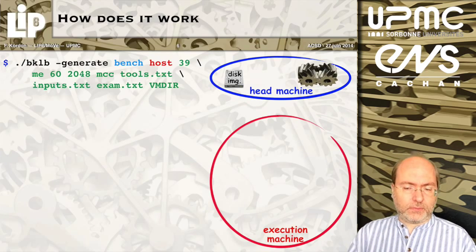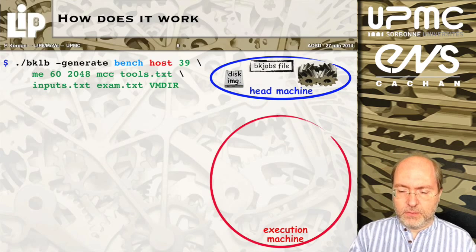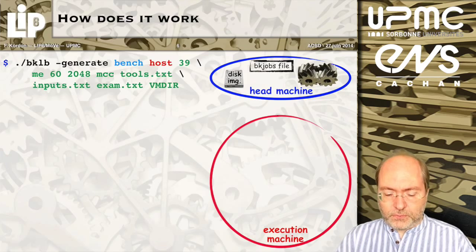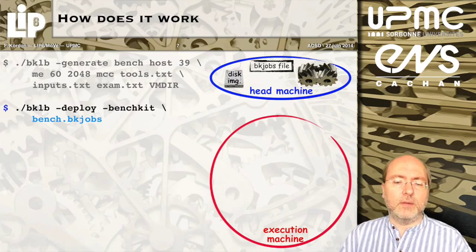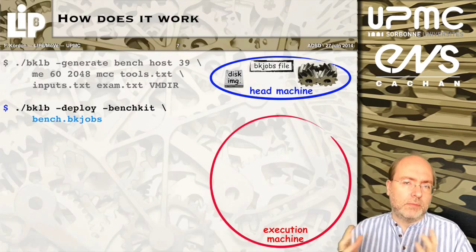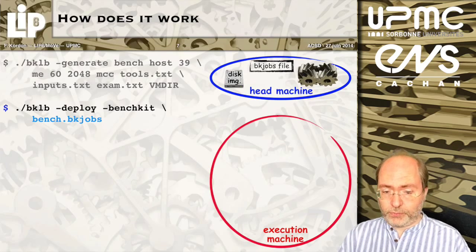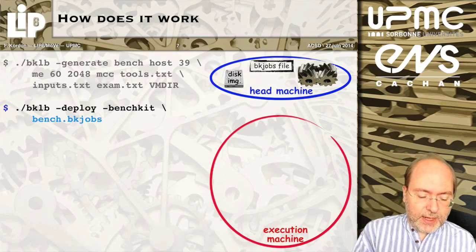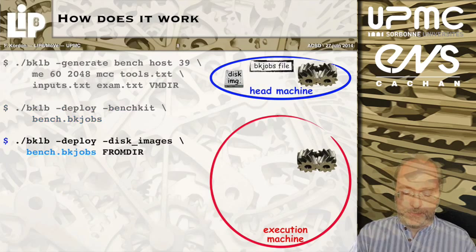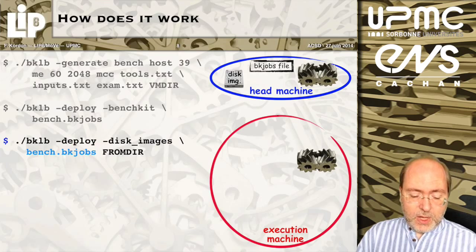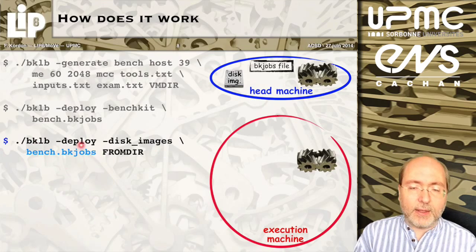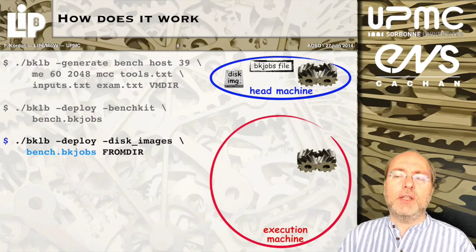At this stage, when you do that, it generates a file that will contain all the information regarding a benchmark. You must then install and deploy BenchKit on the target execution machine. The only requirement is that somebody has installed a virtualization mechanism — for example, QEMU. You deploy BenchKit by referring to the job files, and a connection is made. Then you deploy the disk images from the directory, according to the information stored in the package jobs file. This generates a connection, and if you have several large disk images, it may take a little time.